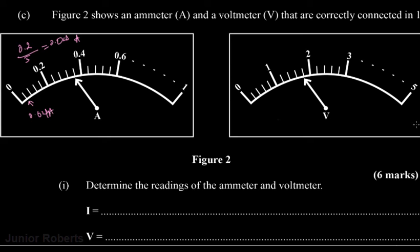To determine the current reading from the ammeter, we count up: 0.2, 0.24, 0.28, 0.32, 0.36. Therefore our current reading is 0.36 amperes.